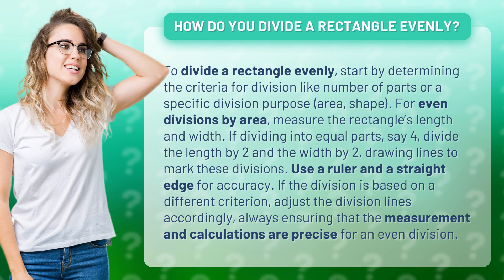Use a ruler and a straight edge for accuracy. If the division is based on a different criterion, adjust the division lines accordingly, always ensuring that the measurements and calculations are precise for an even division.